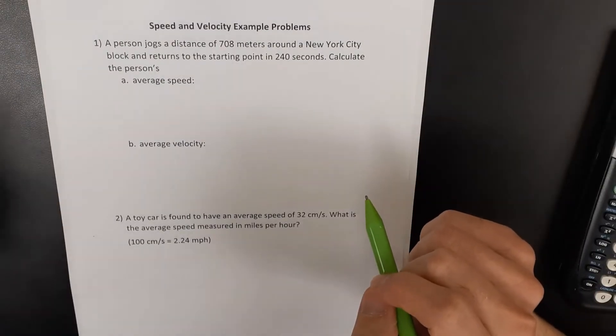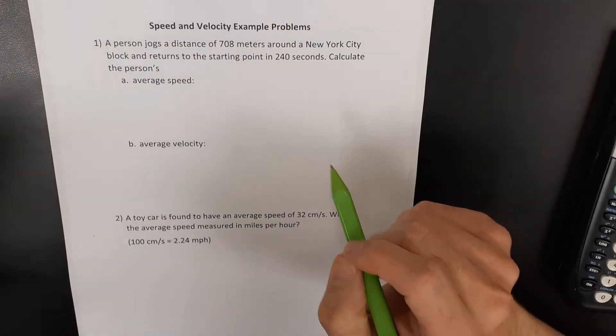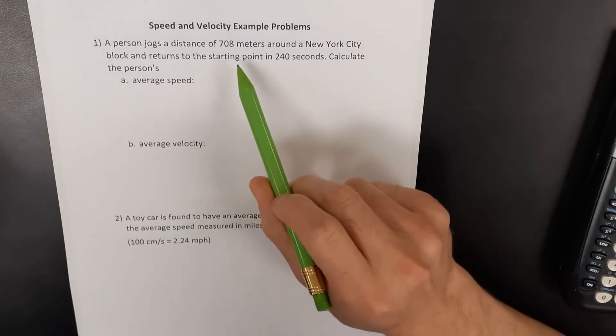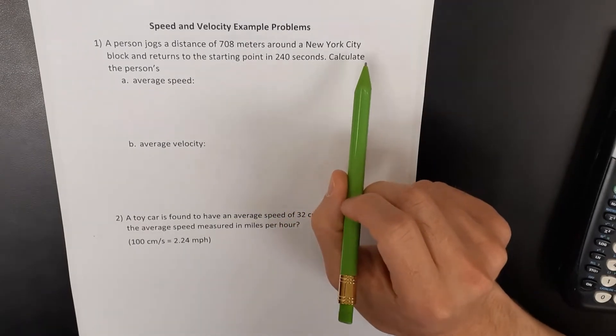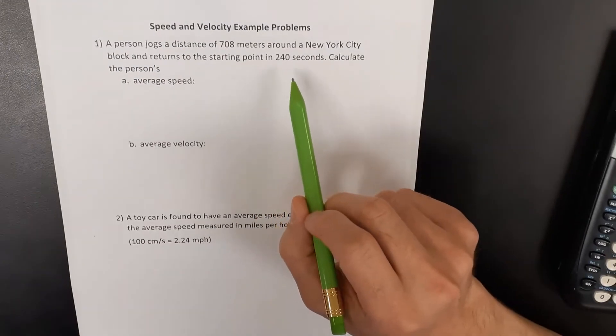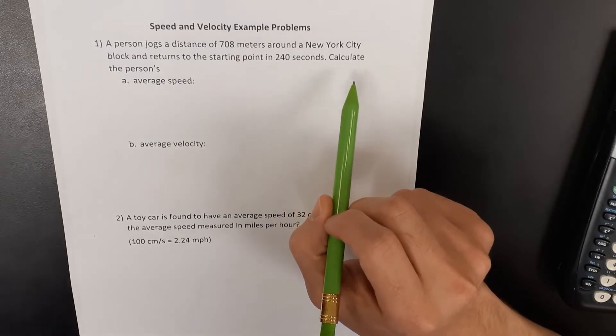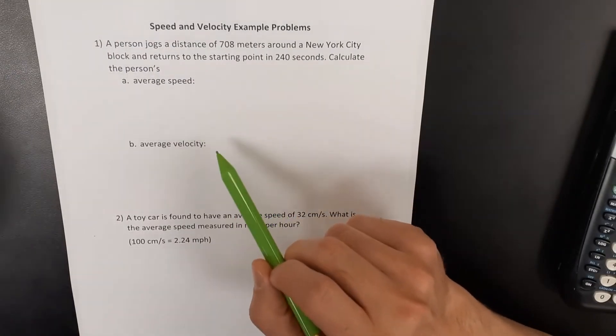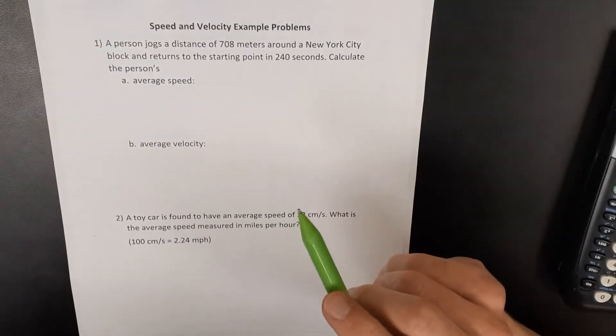Okay, for this first speed and velocity example problem, it says a person jogs a distance of 708 meters around a New York City block and returns to the starting point in 240 seconds. Calculate that person's average speed and average velocity.